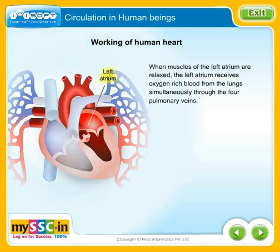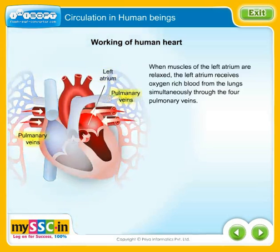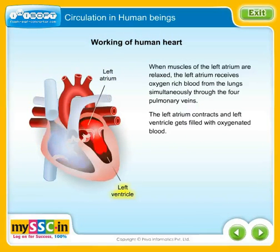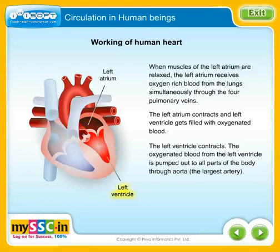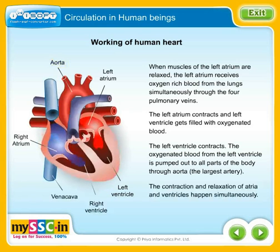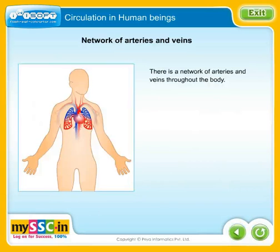When the muscles of the left atrium are relaxed, the left atrium receives oxygen-rich blood from the lungs simultaneously through the four pulmonary veins. The left atrium contracts and the left ventricle gets filled with oxygenated blood. The left ventricle contracts and the oxygenated blood is pumped out to all parts of the body through the aorta, the largest artery.